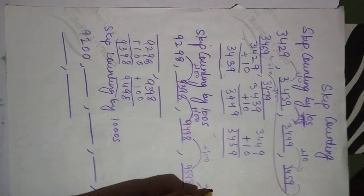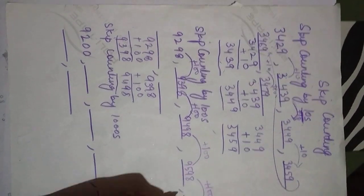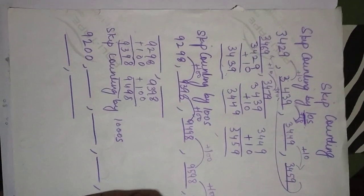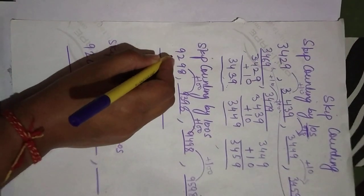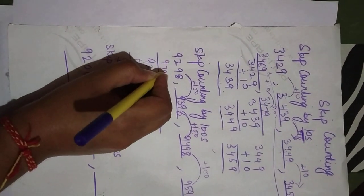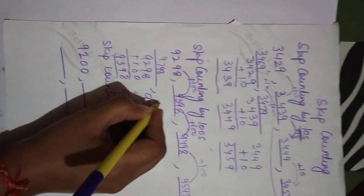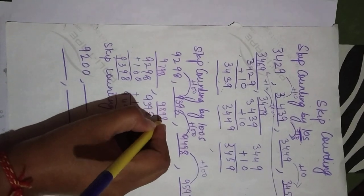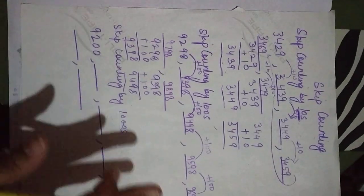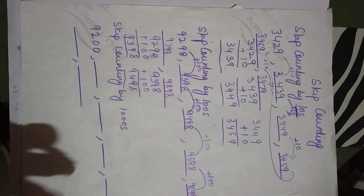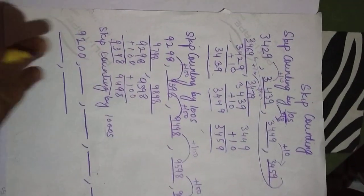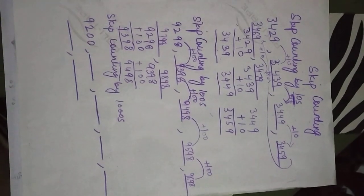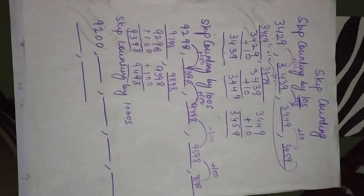Similarly, keep adding 100 and you will get the next number — here and here. Simple. You just have to add 10 — keep adding 10 to the previous number and you will get the next number.